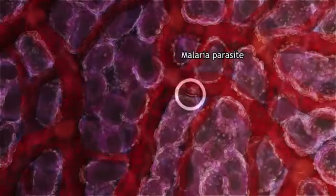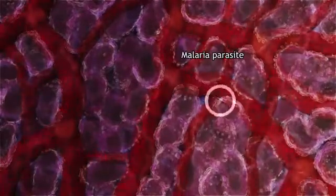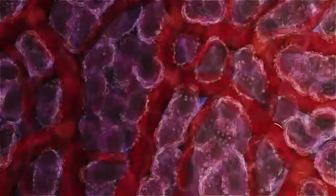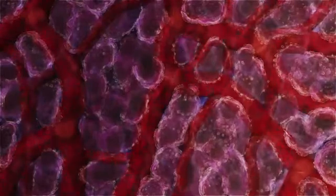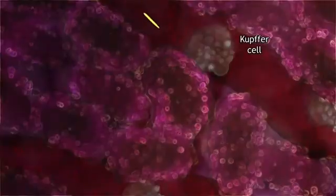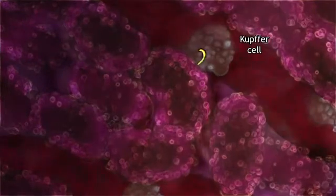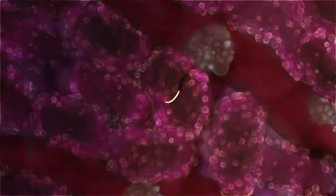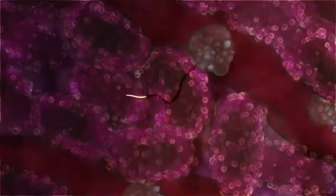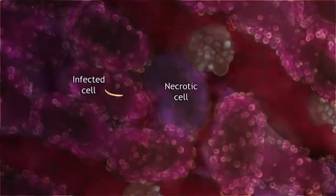Sensing its arrival at the liver, the parasite searches for an exit. A sentinel Kupffer cell is the entry point to liver tissue. Leaving the blood, the parasite infects a liver cell, killing one or more other cells on its way.